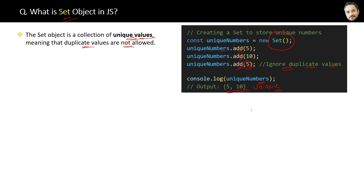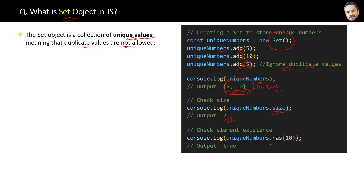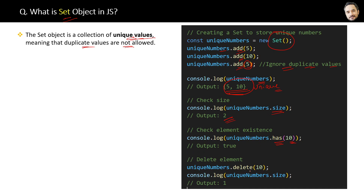This Set also gives us some important methods. To get the number of elements in the Set, we use the size property — similar to the length property in arrays. If you want to check whether an element is present in the Set, you can use the has method. If you want to delete an element from the Set, you can use the delete method.